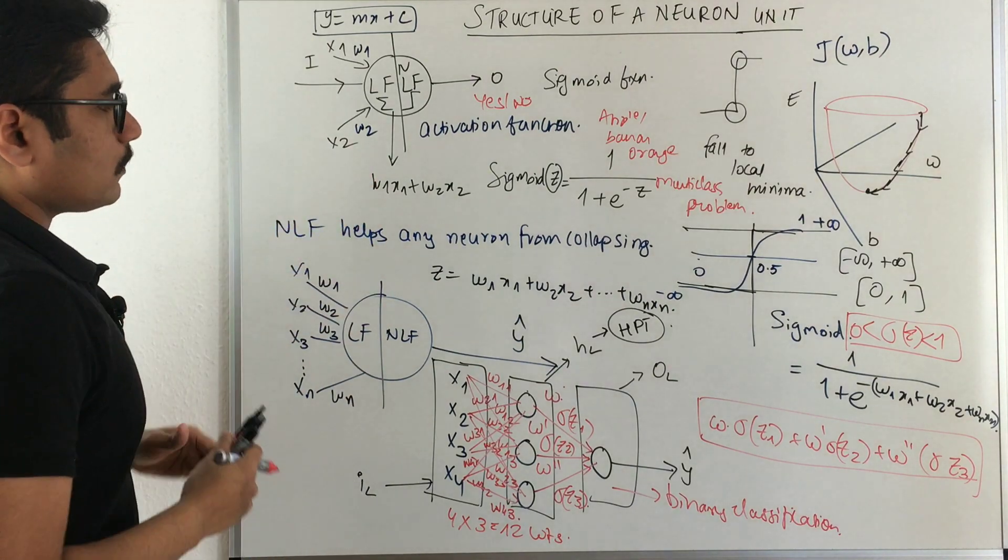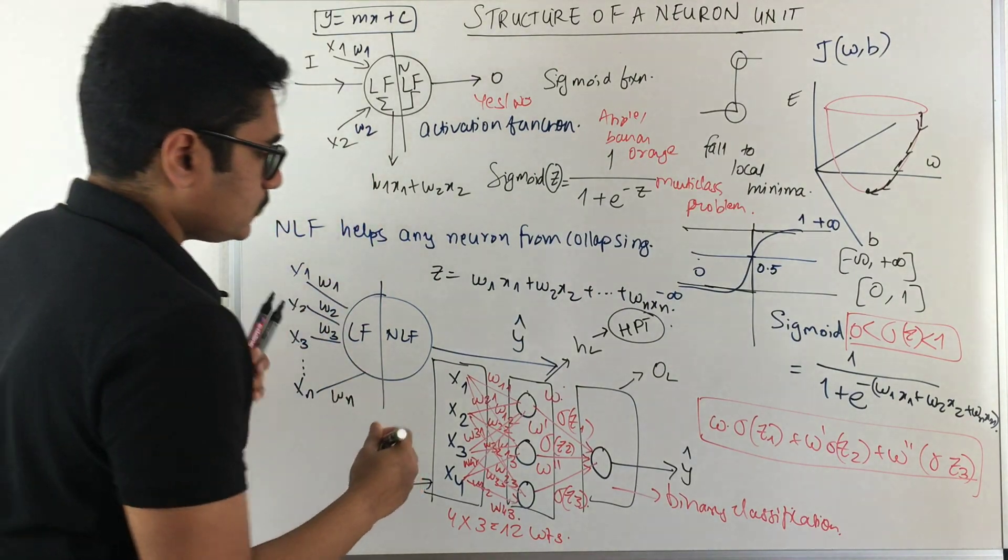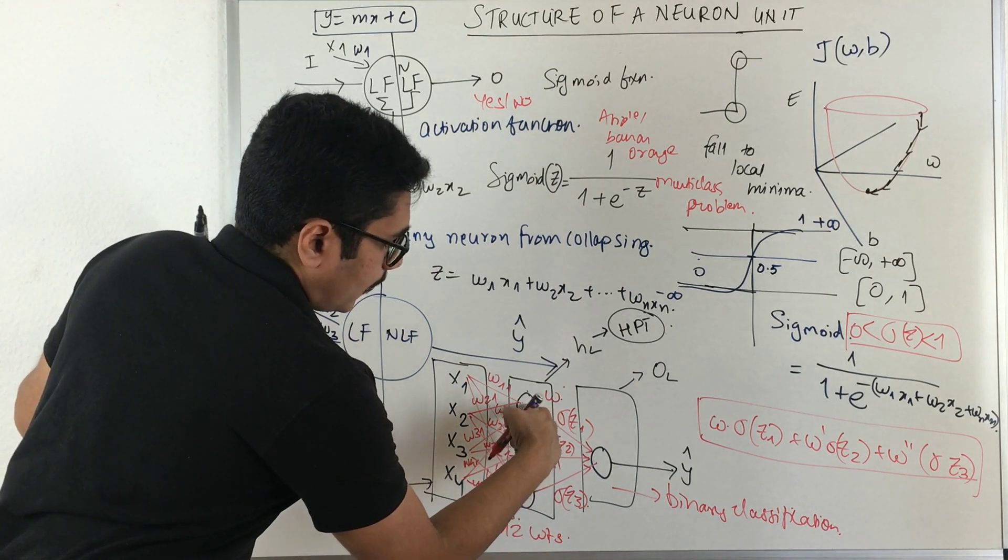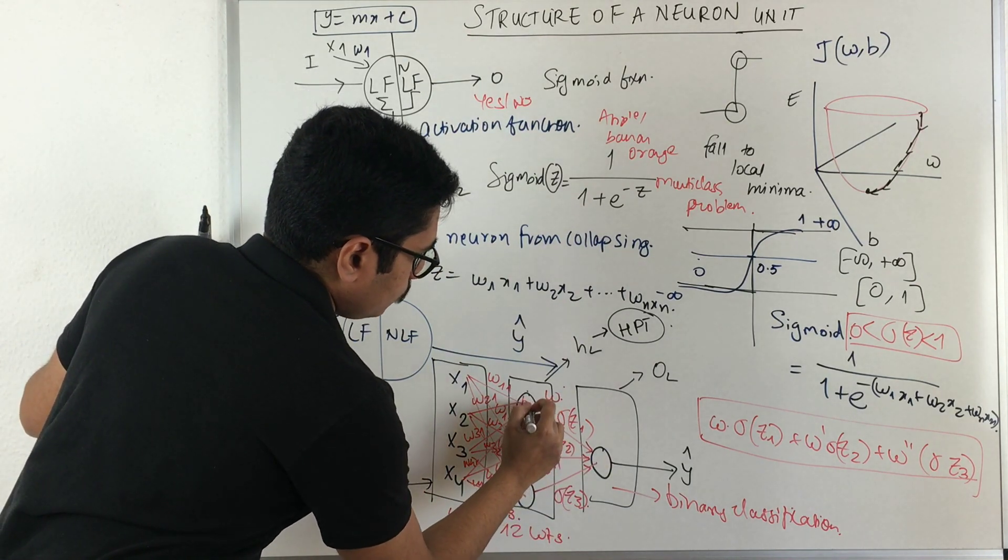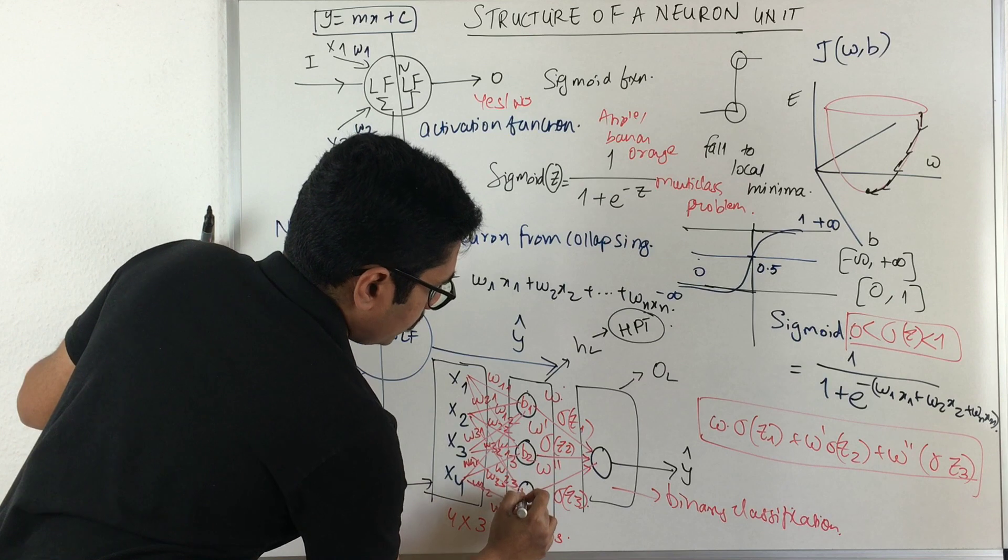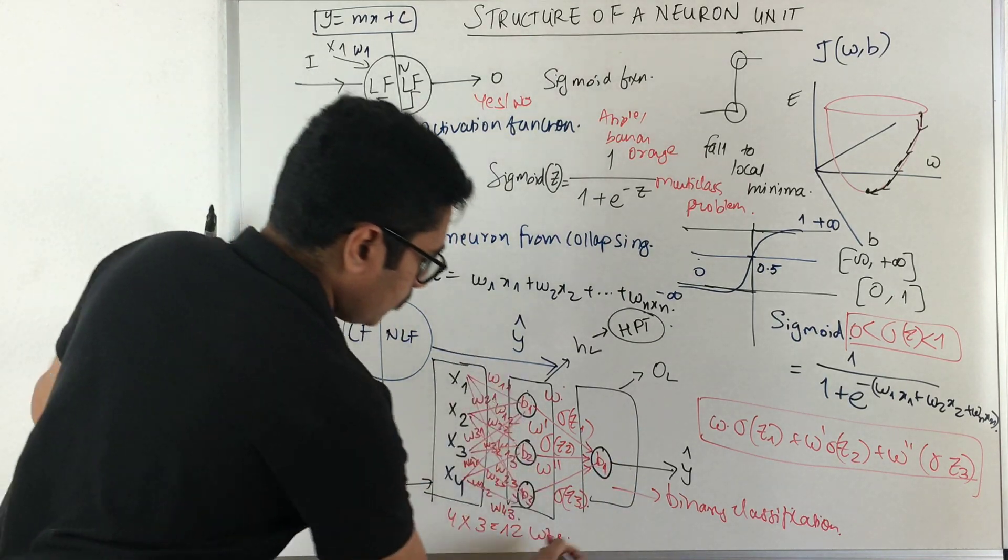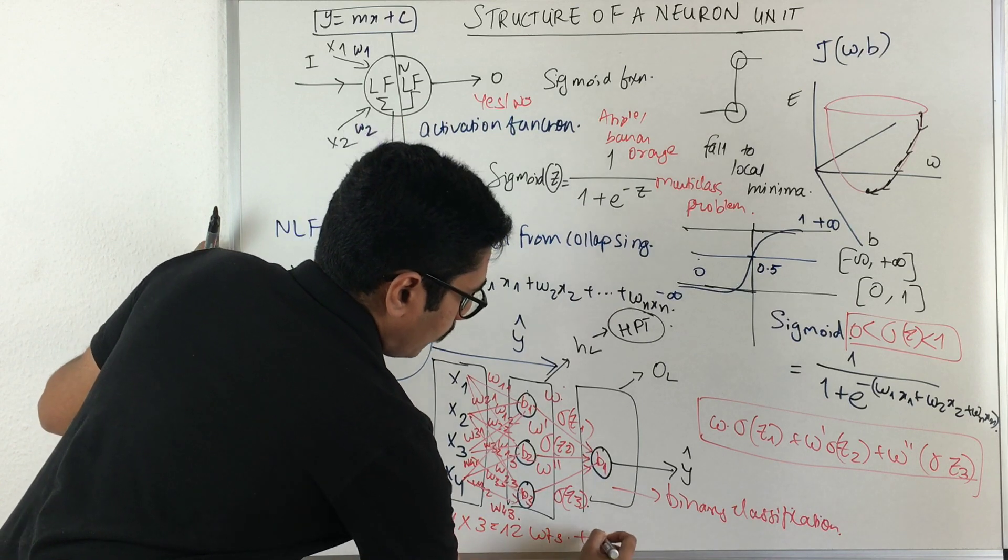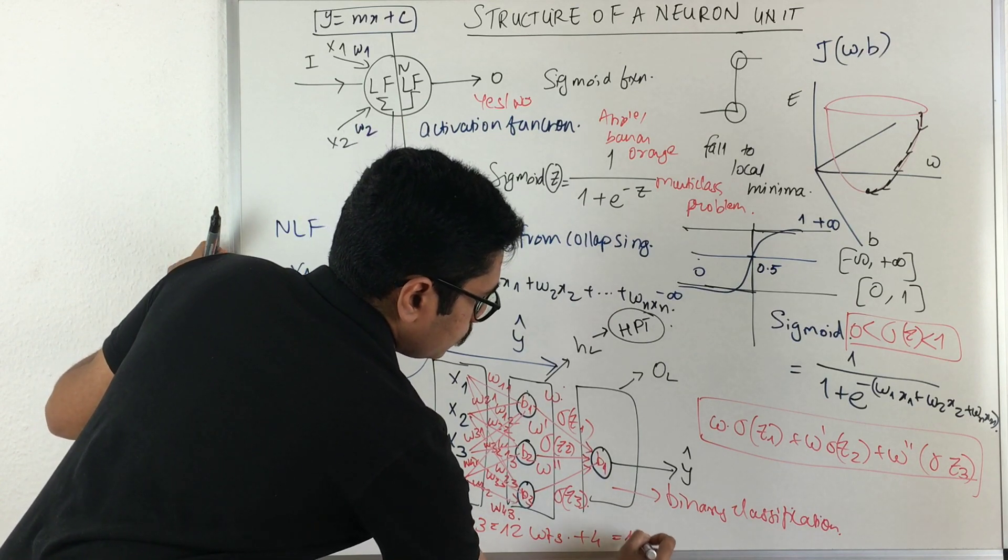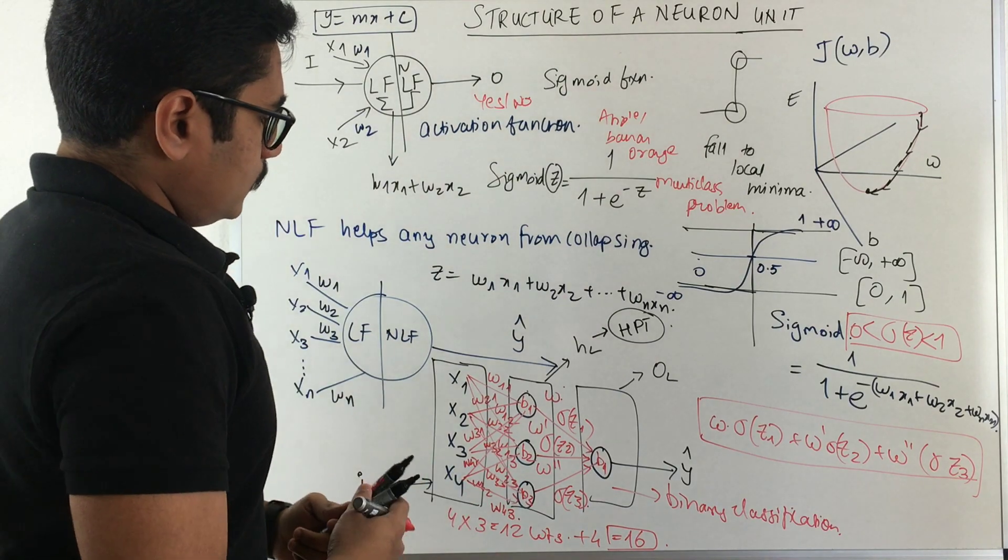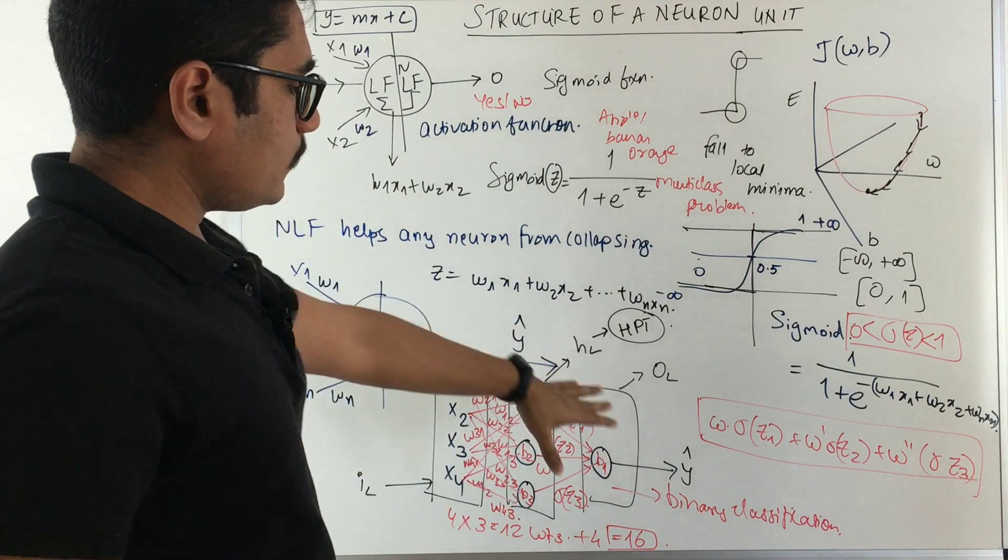Since we have not talked about the bias, bias will be there for each and every neuron. Since we have one, two, three and four neurons, you will have bias1, bias2, bias3 and bias4. With 12 weights, you will have an additional four, that is you will have 16 total of quantities that you will be learning.